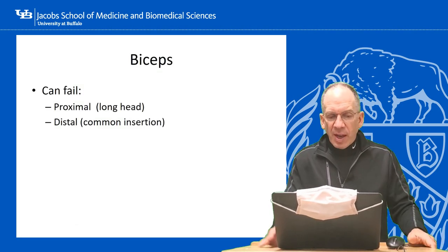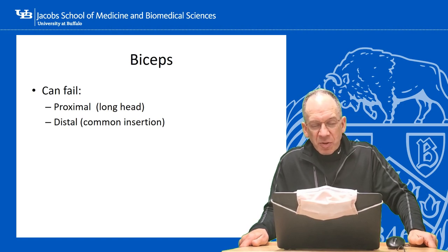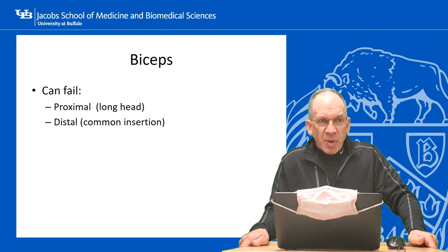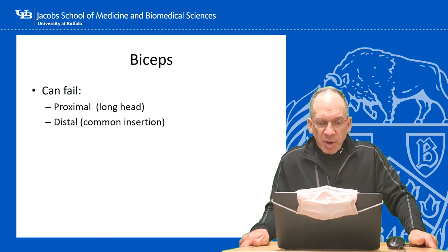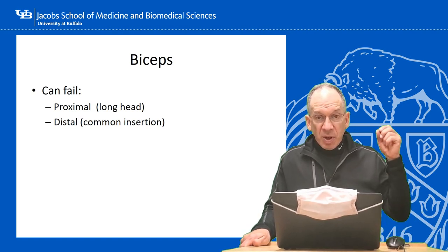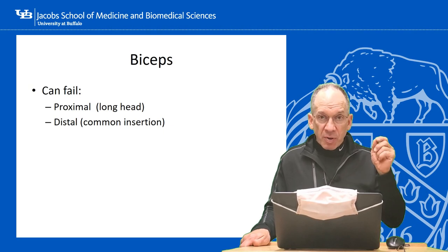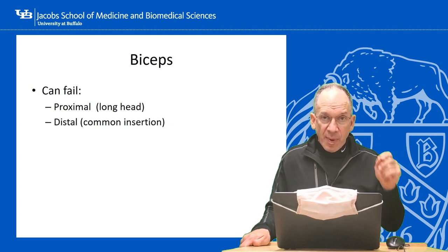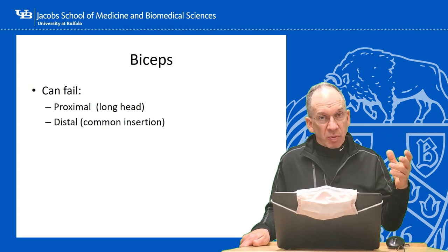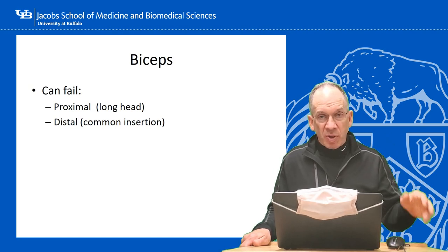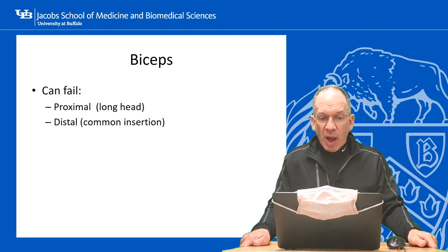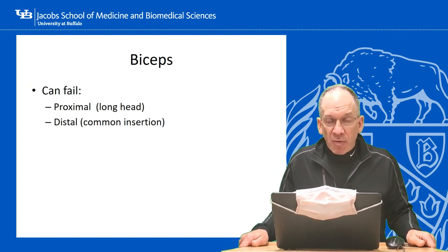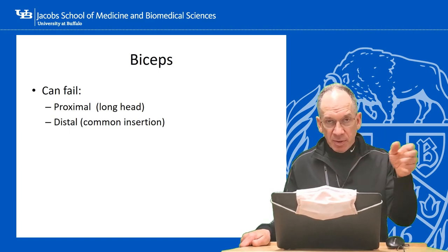The biceps can fail in two places. Proximally, it's essentially always the long head — it's very uncommon for the short head to fail without a coracoid fracture, shoulder dislocation, or tumor. So proximal biceps ruptures refer to the long head of the biceps. That's important — it could be a test question.